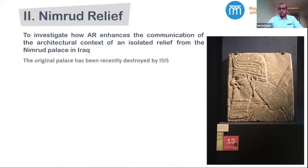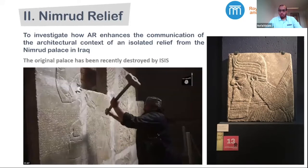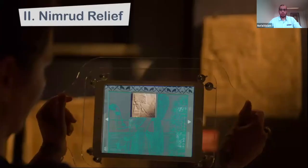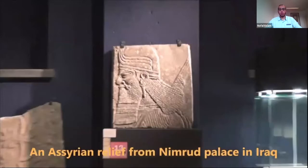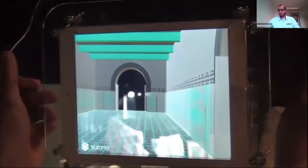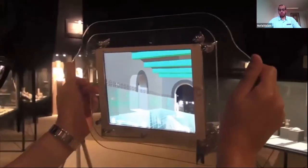In the second study, we investigated how augmented reality enhances the communication of the architectural context of an isolated relief from the Nimrud Palace in Iraq, which was exhibited completely out of context at the museum in Brussels. The original palace has been recently destroyed by ISIS. We digitally reconstructed the room where the artifact was located, using an abstract visualization that emphasized architectural features. We then developed an augmented reality application and invited museum visitors to interact with it — pointing the camera to the object to see the room where it was located, look around from different angles, and explore the different architectural features of that room.